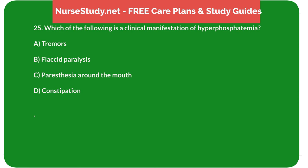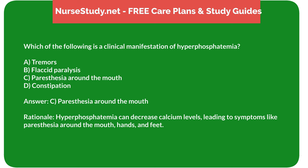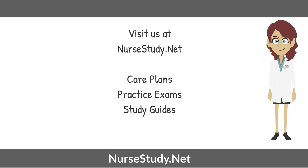Question 25: Which of the following is a clinical manifestation of hyperphosphatemia? A. Tremors. B. Flaccid paralysis. C. Paresthesia around the mouth. D. Constipation. Answer: C. Paresthesia around the mouth. Rationale: Hyperphosphatemia can decrease calcium levels, leading to symptoms like paresthesia around the mouth, hands, and feet. Visit Nursestudy.net for more nursing practice exams, care plans, and study guides.